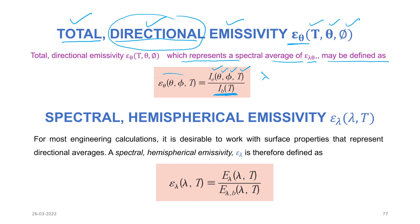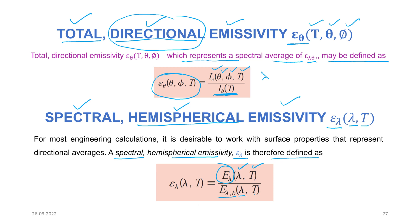Spectral hemispherical emissivity ε_λ, a function of lambda and T, considers all directions over the hemisphere rather than a particular direction. It is defined as the spectral emissive power of the real surface ε_λ(λ, T) divided by ε_λb(λ, T) — the corresponding black body spectral emissive power. No directional dependence appears here because the hemispherical integration covers all directions.